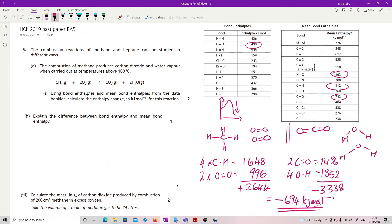Explain the difference between bond enthalpy and mean bond enthalpy. Because you have these two different ones in the data book, bond and mean bond. So mean is an average. So what you need to basically say is that mean is an average across all different compounds and environments.